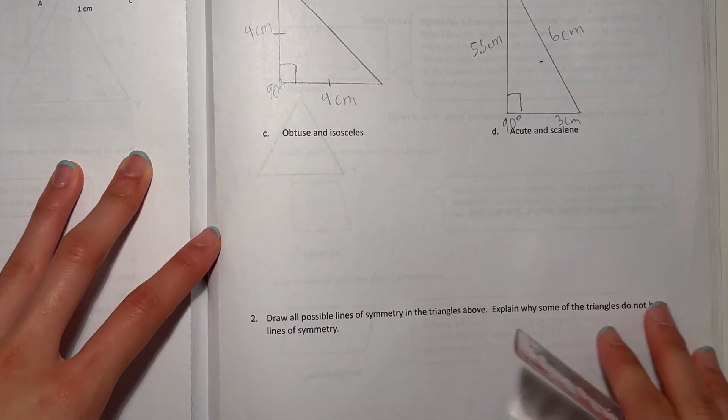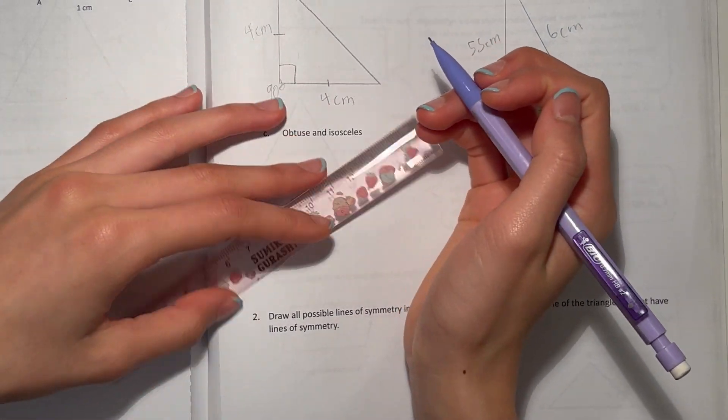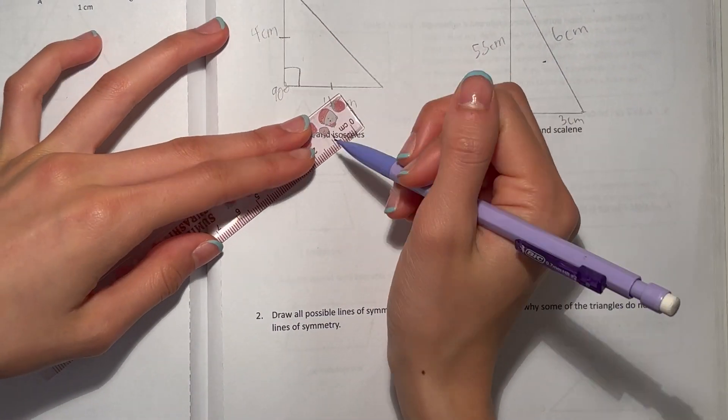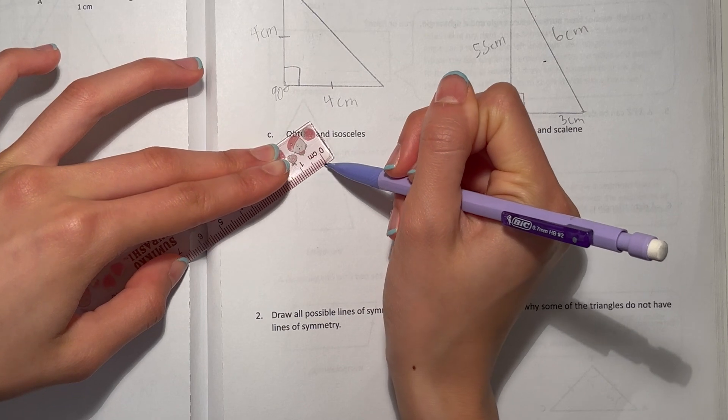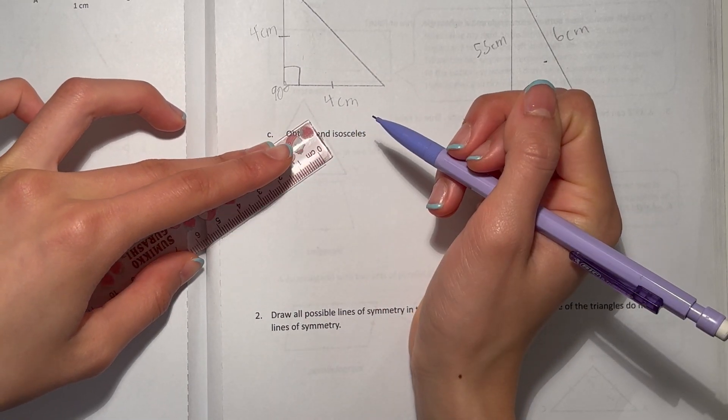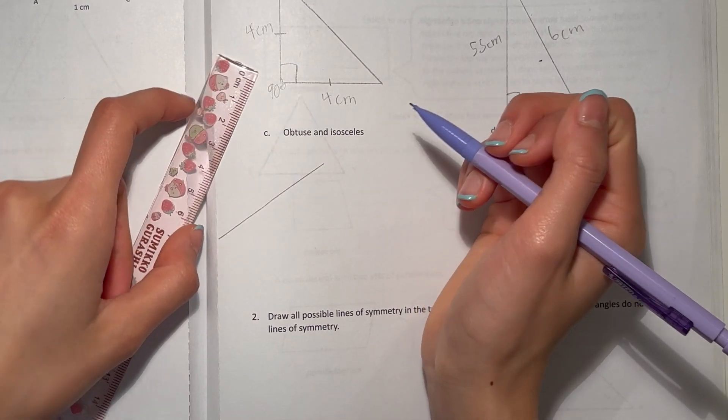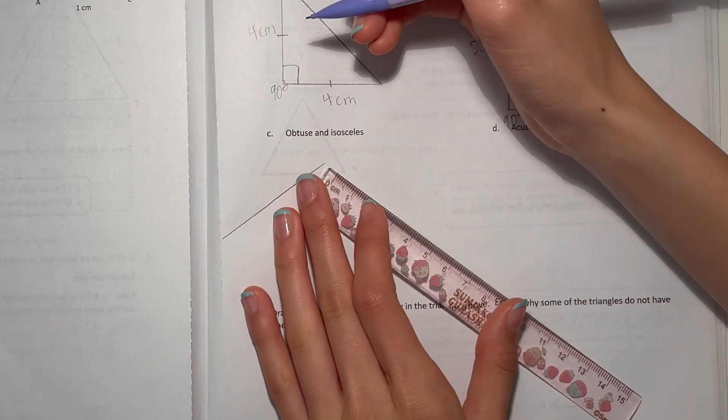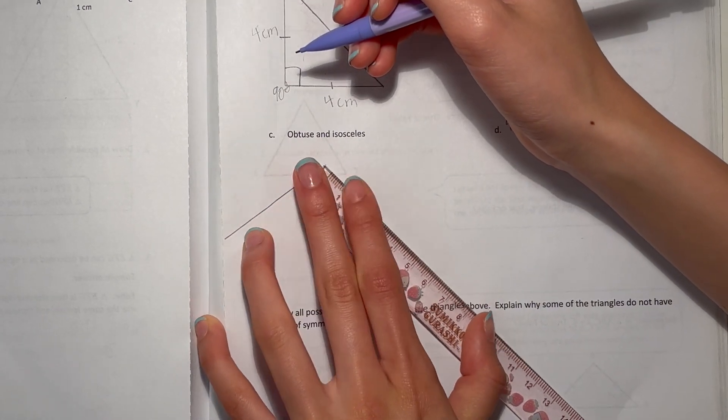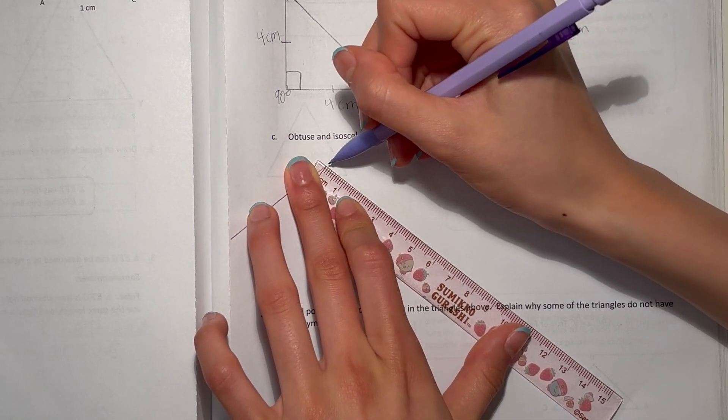All right, C: obtuse and isosceles. Isosceles means that two sides are equal. So since it's obtuse, we can make one line here that is five centimeters. Another one here, you can make this one also five centimeters. You can make it extra wide.